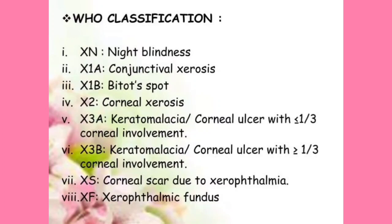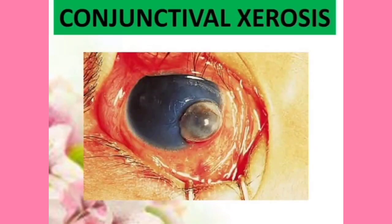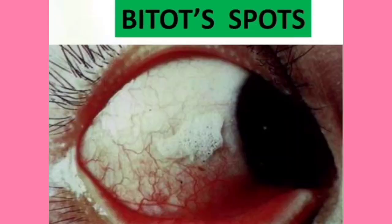Now let's look at pictures to understand these conditions better. This is conjunctival xerosis — look at the conjunctiva surrounding the cornea, the white portion; you can see it has dried out. Now look at this — this is the Bitot's spot; you can see a white foamy deposit. Its classification is X1B — B for Bitot's spot.